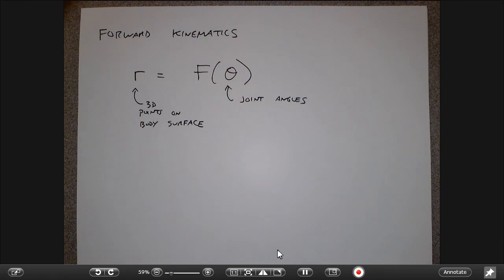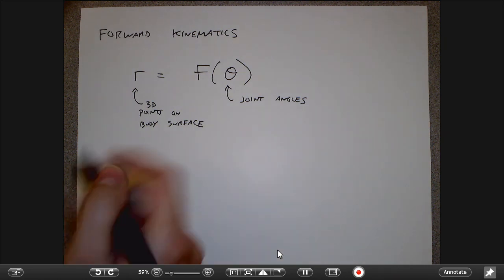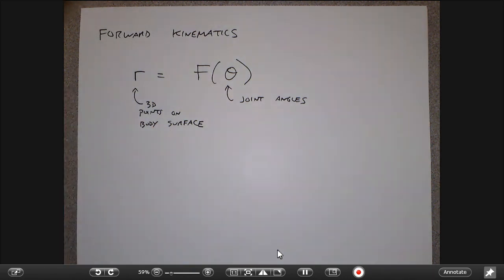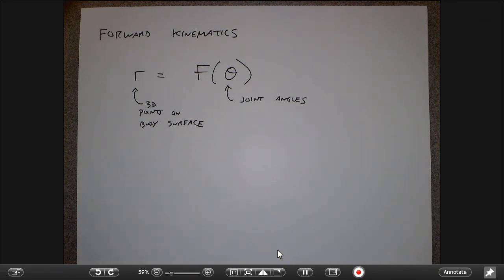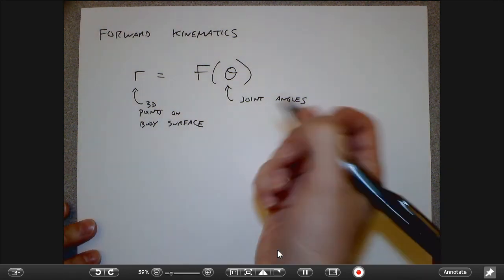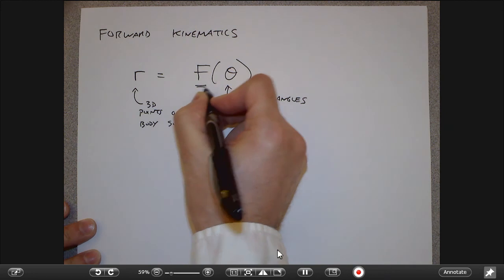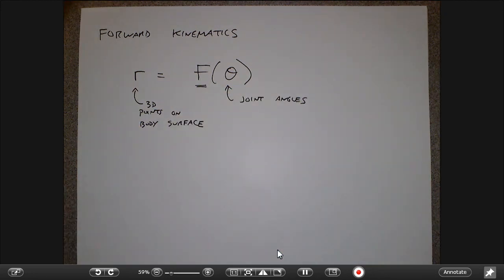A lot of times what we care about in real motion capture scenarios is going the other way. What you actually see in the motion capture studio are the surface points — you see some points on the surface of the body, and from that you want to infer what the joint angles are. We're doing the inverse problem, that's why it's called inverse kinematics. The problem is we can't just take this function and undo it because there are all these trigonometric functions inside.